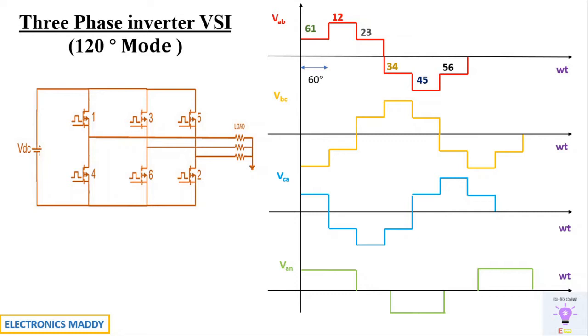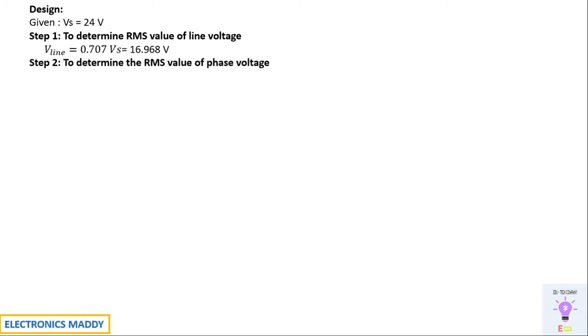Let us look at the design portion. The supply voltage is 24 volts according to our consideration. The RMS value of line voltage that we are supposed to get is 16.968 volts. And the RMS value of phase voltage is obtained by dividing the line voltage by root 3.